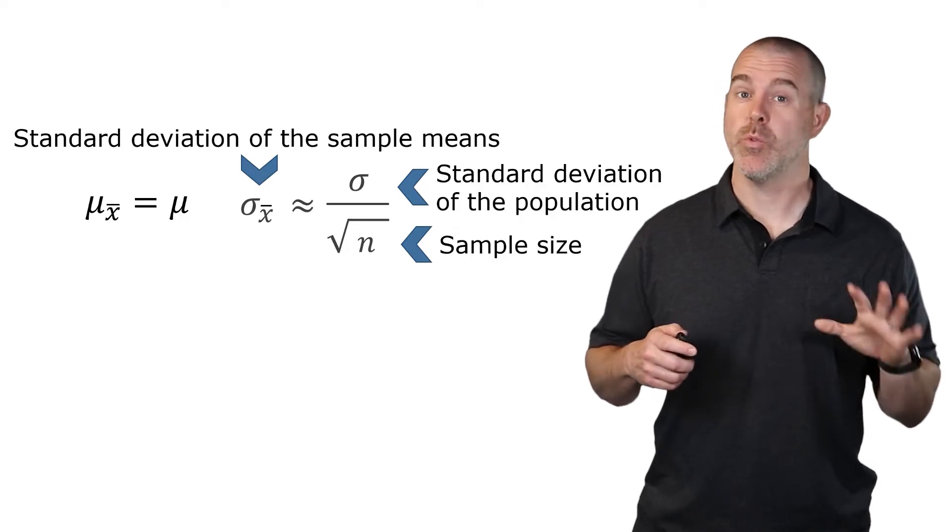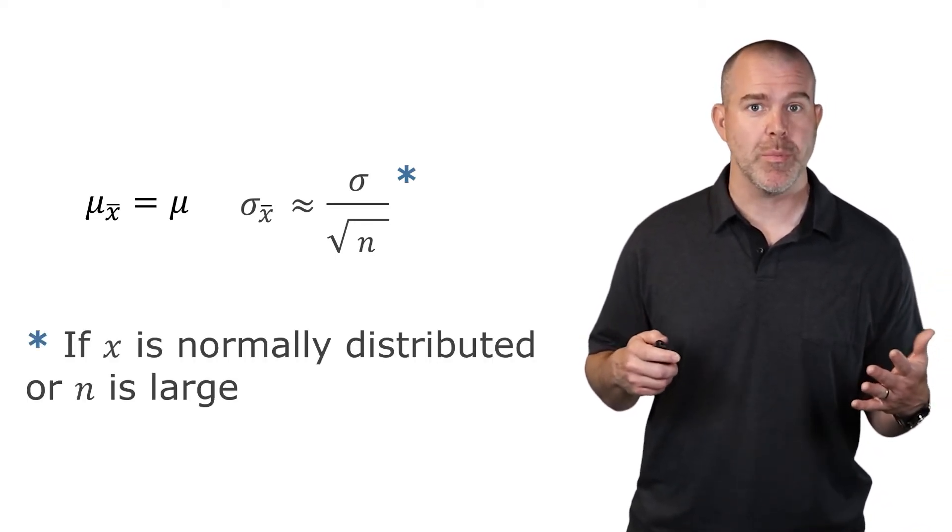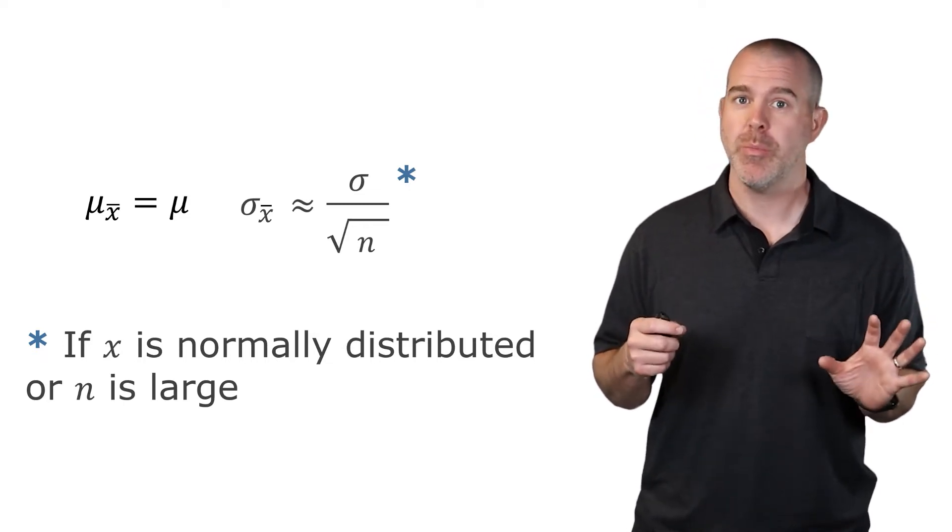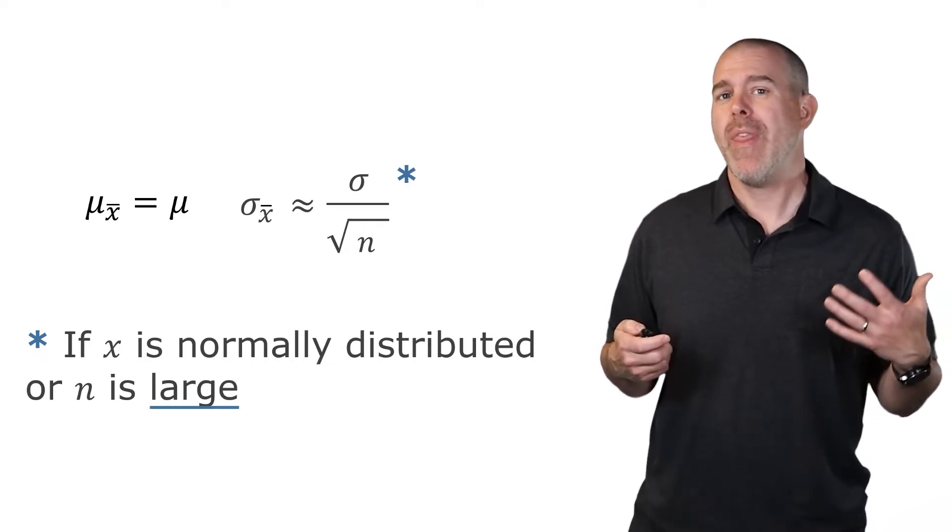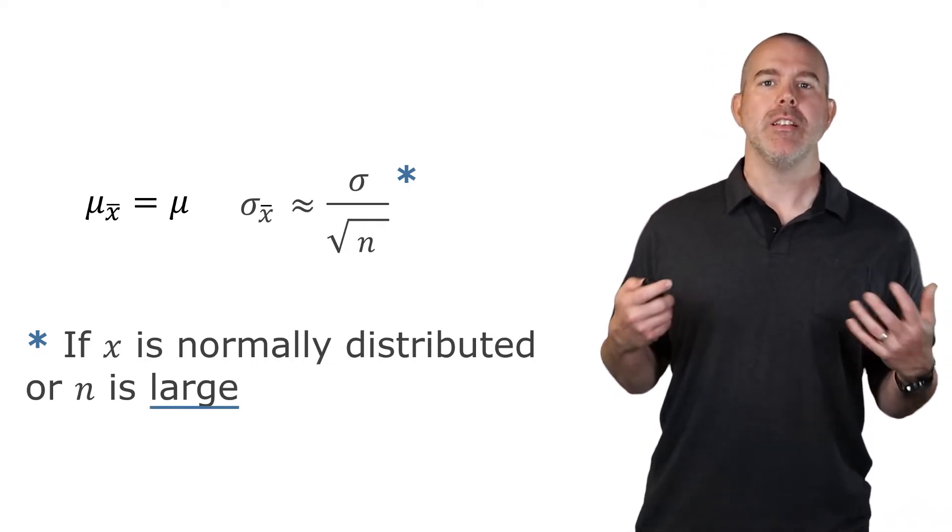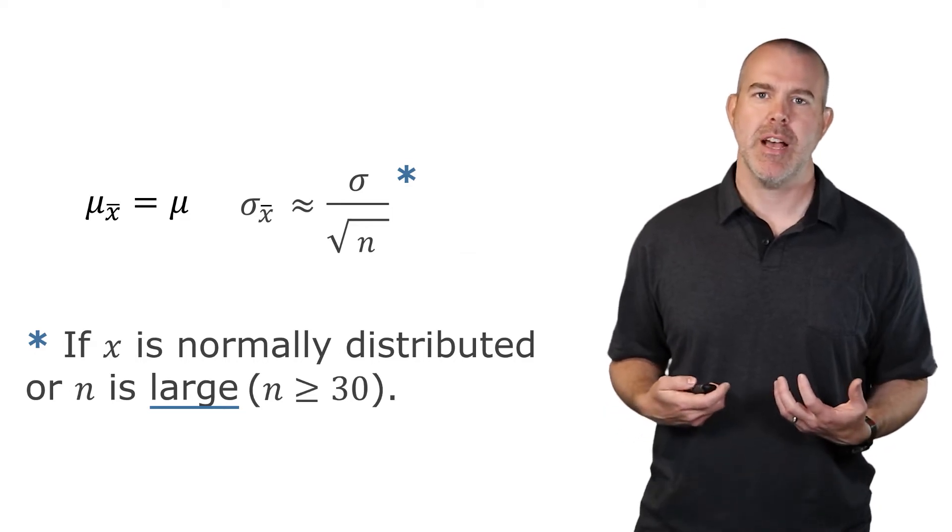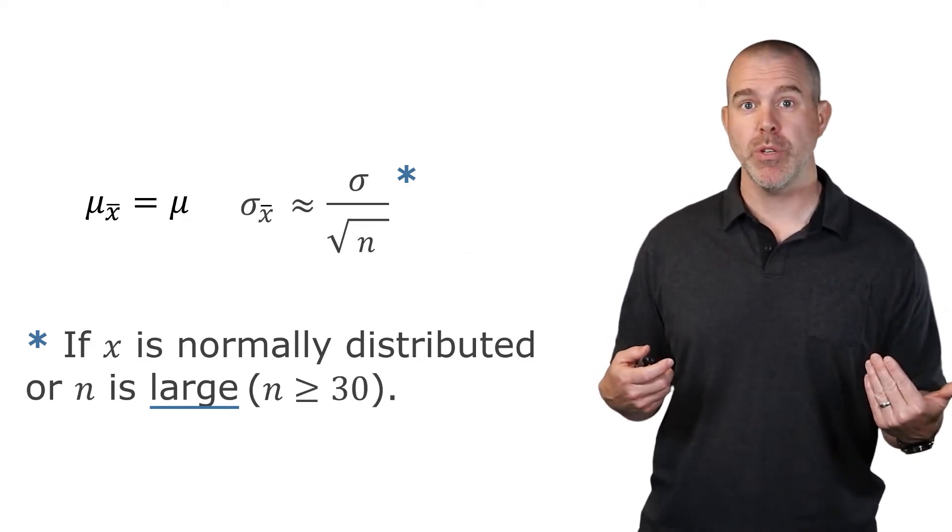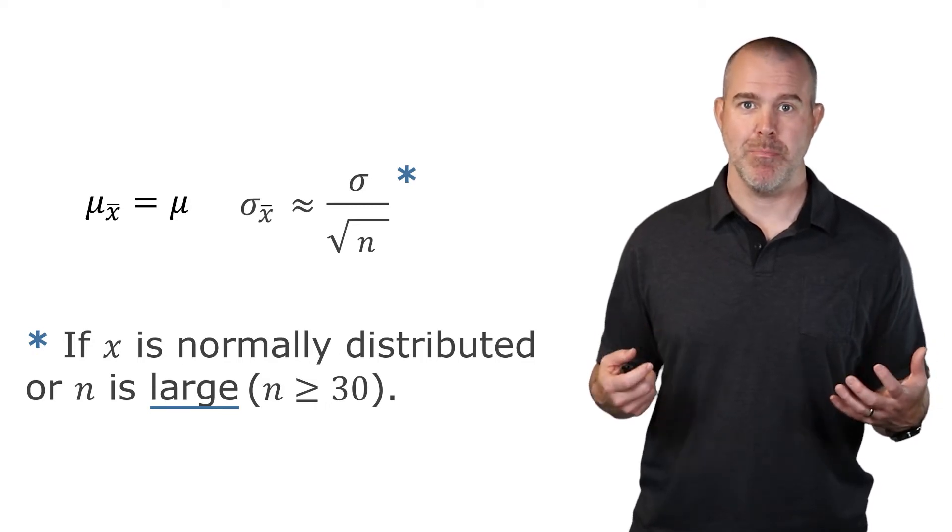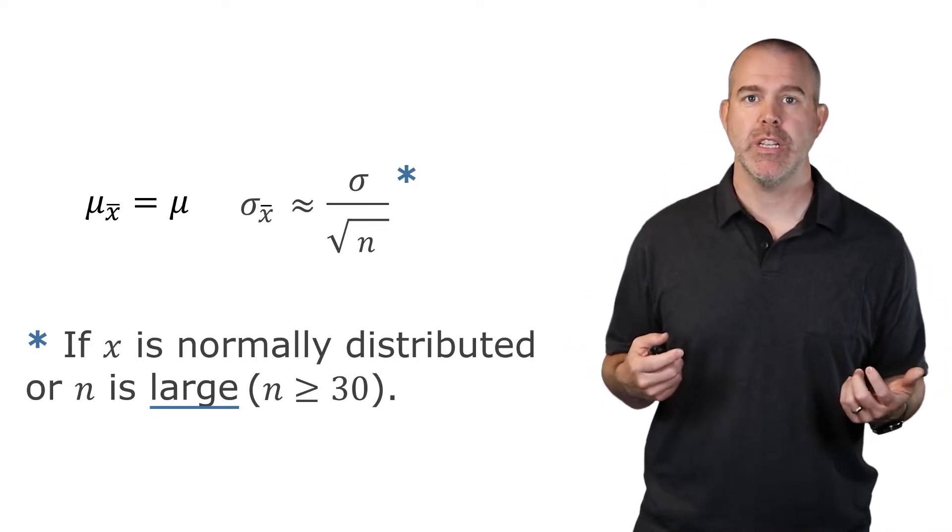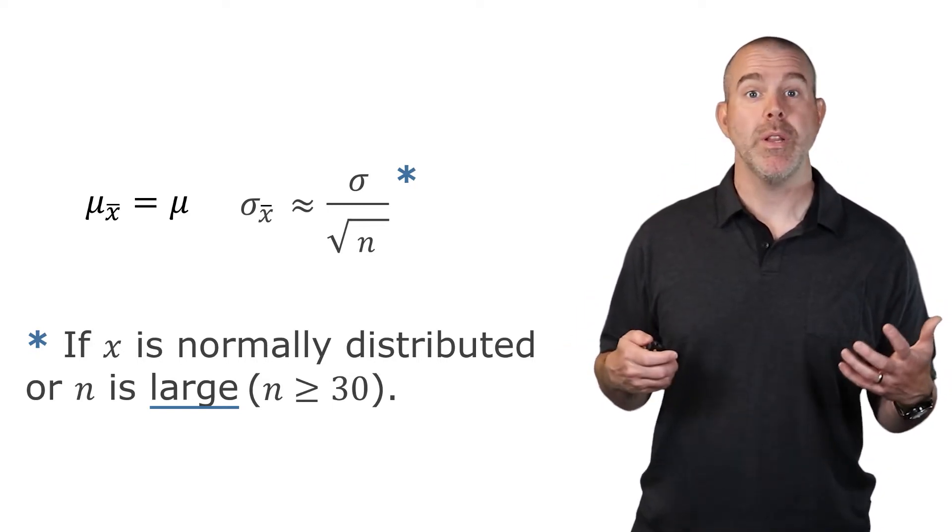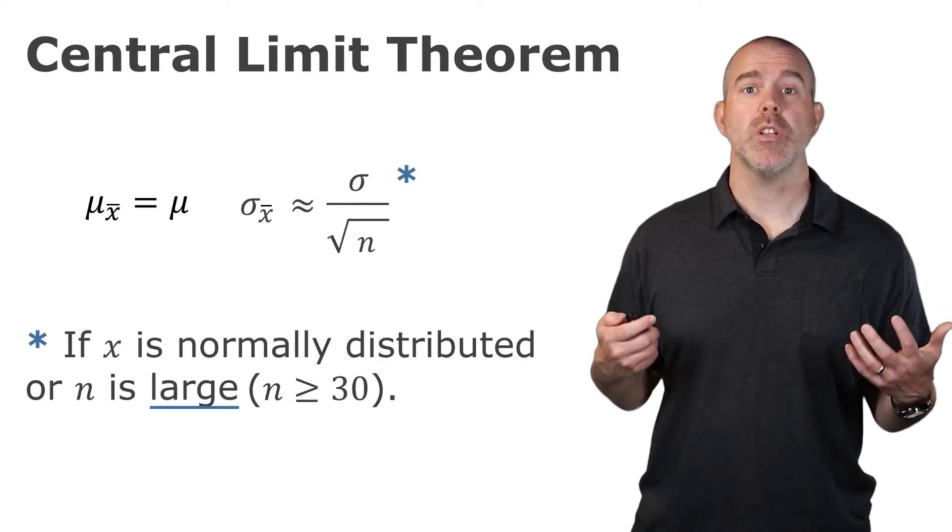Now there are some conditions. We saw this wasn't true for small sample sizes. This is technically only true if x is normally distributed - ours was not, ours was skewed right - but if x is normally distributed it'll be fine. Or if your sample size is large, whatever that means, there's no hard line for that. Typically, a good guide is a sample size of at least 30. The more skewed the distribution, the larger your sample size needs to be to make sure that the sample means will be symmetrically distributed, that bell-shaped curve. Formally, this is called the central limit theorem.